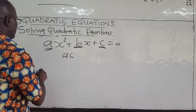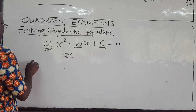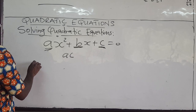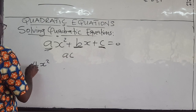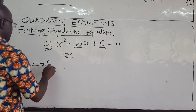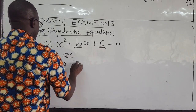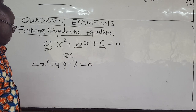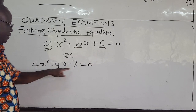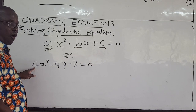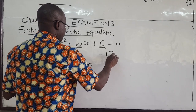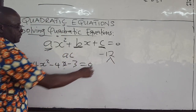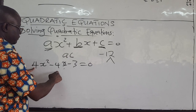For example, suppose that you have 4x² minus 4x minus 3 = 0. So if you multiply negative 3 by 4, you have negative 12. You look for factors of negative 12 that will add up to give you negative 4.